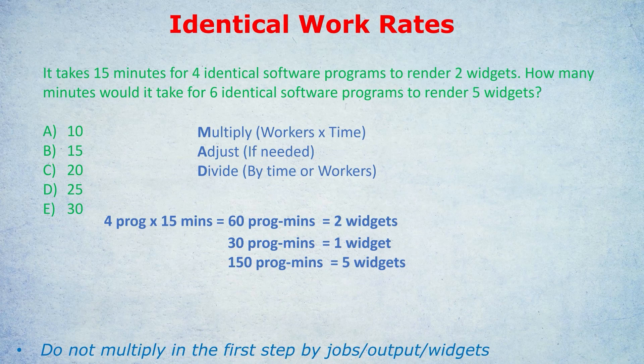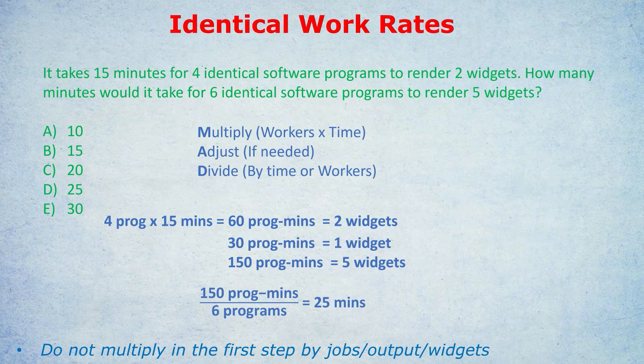What's the final step in the MAD method? It's divide. Are we dividing by five, two, four, or 15? No — we're dividing by six. The divide step always uses the deadline or the number of workers given in the final sentence. Don't get distracted by the four and the 15 — that was in the first sentence. We're now talking about five widgets, so it's the six identical software programs. Dividing by six programs, the programs units cancel, leaving minutes. So 150 divided by six is 25 minutes. It would take 25 minutes with six programs to render five widgets.